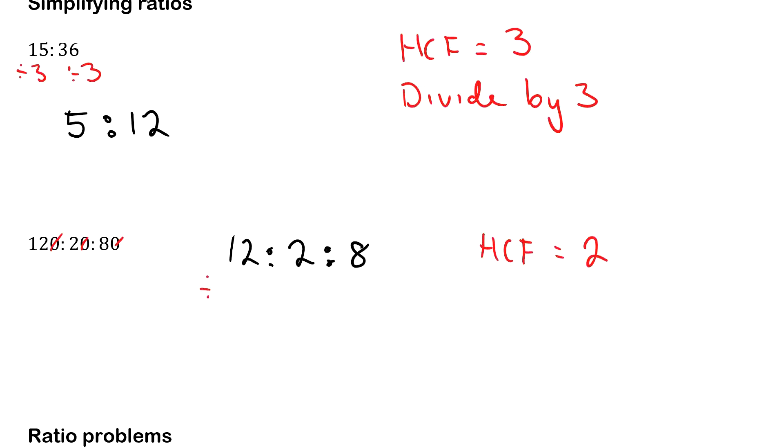So we're going to divide everything by 2. We get 12 divided by 2 is 6, 2 divided by 2 is 1, 8 divided by 2 is 4. And that is our simplified ratio.